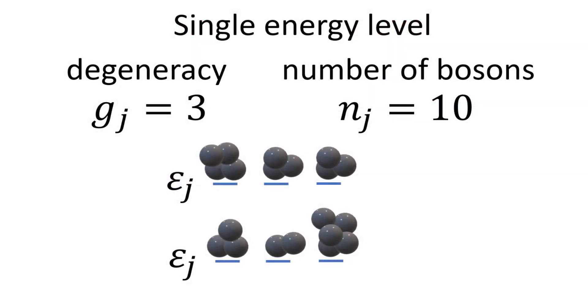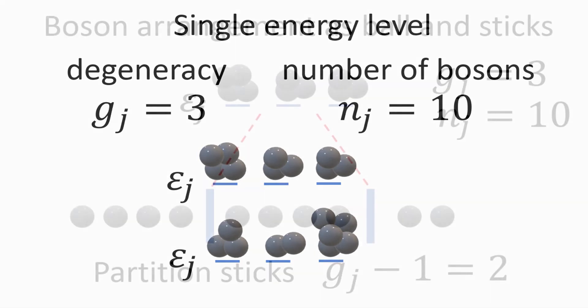Let's start with a single energy level, which has three possible states, or a degeneracy g equals 3, and the number of bosons to be n equals 10. There are of course many different ways to arrange them, and here we only show two possible ways of distributing the bosons.